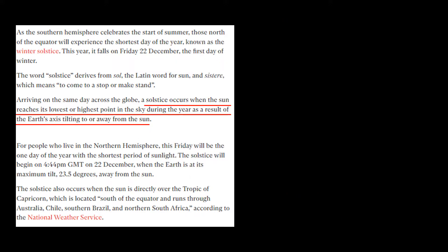The article says a solstice occurs when the sun reaches its lowest or highest point in the sky during the year as a result of the Earth's axis tilting to or away from the sun. This is both badly written and incorrect.